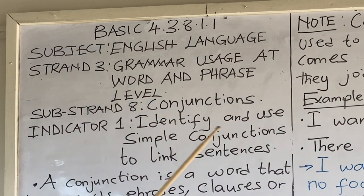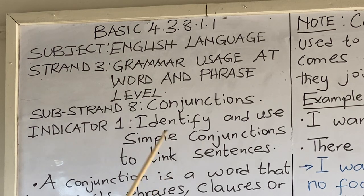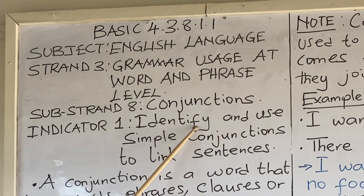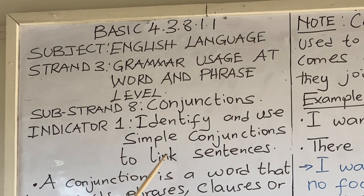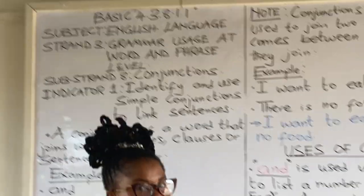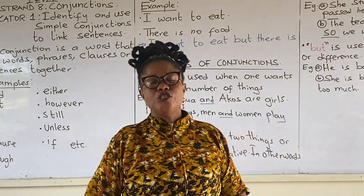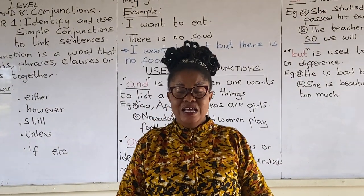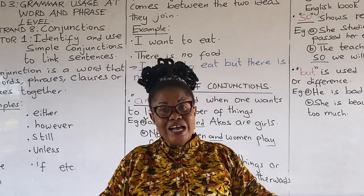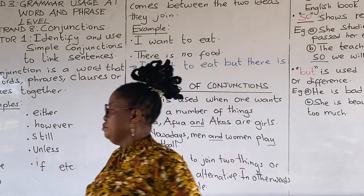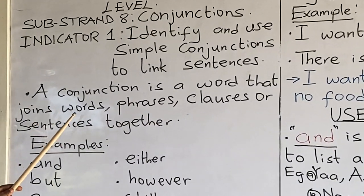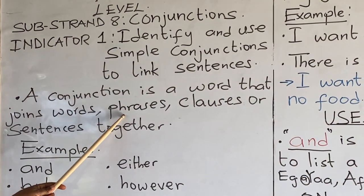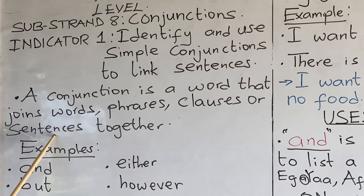Identify and use simple conjunctions to link sentences. Today's lesson is on conjunctions. Let's look at what conjunction means. A conjunction is a word that joins two words, phrases, clauses or sentences together.